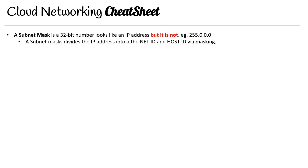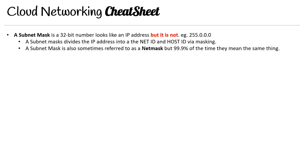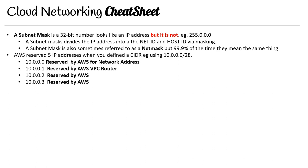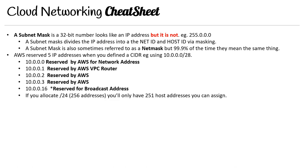A subnet mask is a 32-bit number that looks like an IP address but isn't — for example, 255.0.0.0. A subnet mask divides the IP address into the network ID and the host ID. It's also sometimes referred to as a netmask. AWS reserves five IP addresses when you define a CIDR address: one for the network address, one for the VPC router, two others that are reserved, and the last one is always reserved for the broadcast address. So if you allocate a /24, which is 256 addresses, you'll actually only have 251 usable addresses after subtracting the five reserved ones.